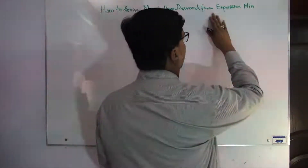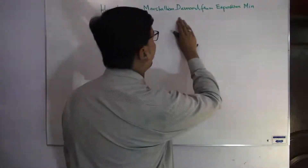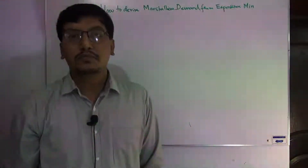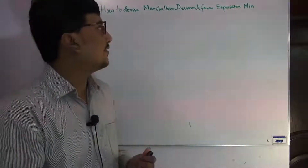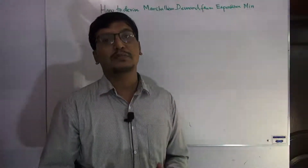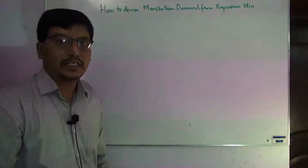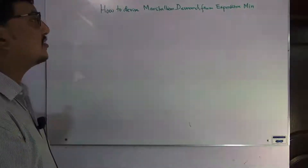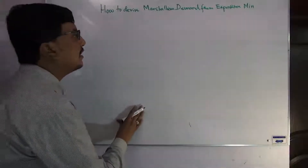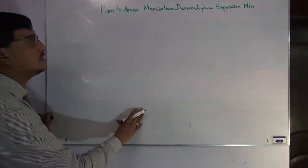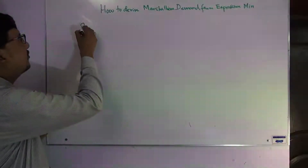We are going to solve the problem of the expenditure minimization, and the question is: what will be the Marshallian demand function in that case? We again have six steps and we will follow these steps to find out the Marshallian demand function using the approach of expenditure minimization. So in step number one, let us discuss.